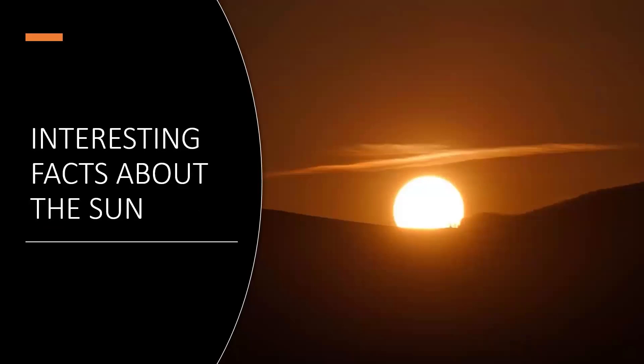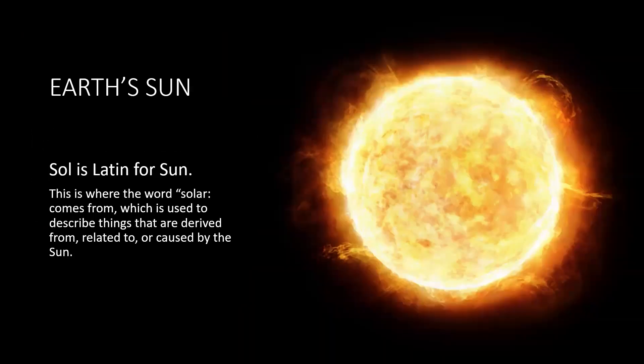First we will be covering some interesting facts about the Sun. Most of the pictures that are here displayed come from the nasa.com website. The Latin for Sun is sol, and this is where we get the word solar. Anything that has a prefix of sol to it describes what are derived from, related to, or caused by the Sun. So we have the solar system, solar equinox, solar cells, etc.